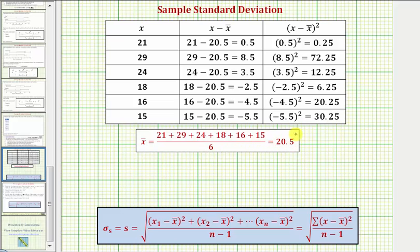If the mean doesn't terminate, we should include at least three or four decimal places for accuracy. So notice the second column, x minus x bar, we started with the data values and then subtracted the mean.